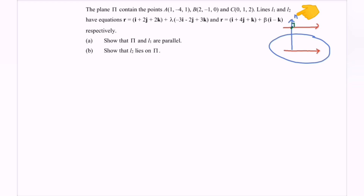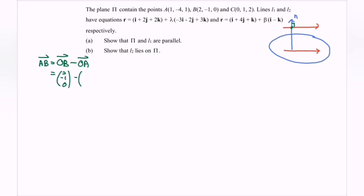First, what we have to do is find the normal for the plane. We have vector AB which is equal to OB minus OA. OB is (2, -1, 0) and OA is (1, -4, 1). Simplifying, vector AB equals (1, 3, -1).